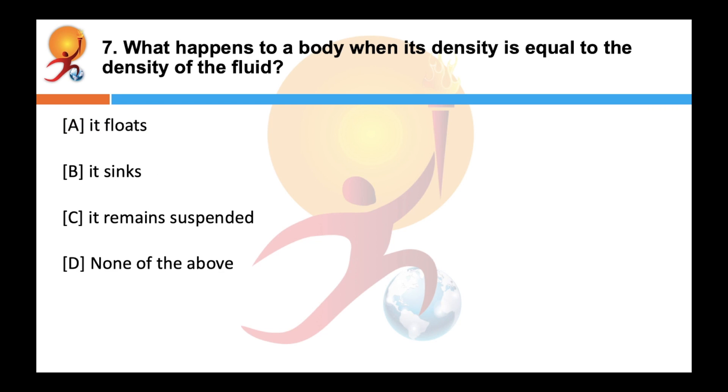What happens to a body when its density is equal to the density of the fluid? Correct answer is C, it remains suspended. So if the buoyant force equals the object's weight, the object will remain suspended at that depth. If the buoyant force is greater than the object's weight, the object will rise to the surface and float. If the buoyant force is less than the object's weight, the object will sink.